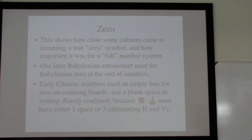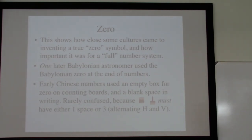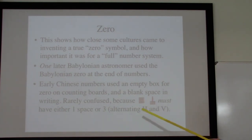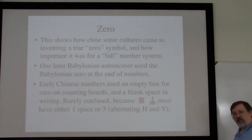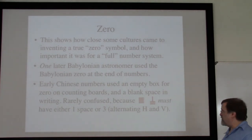Those early Chinese numbers — which certainly predate the use of zero even in India — used an empty box for zero on the counting boards. So at least with respect to counting boards, they had a completely successful solution to the issue of zero: you just left that box empty. You were doing everything on boxes, so place notation was easy to understand. But when writing things down, this could be a problem.